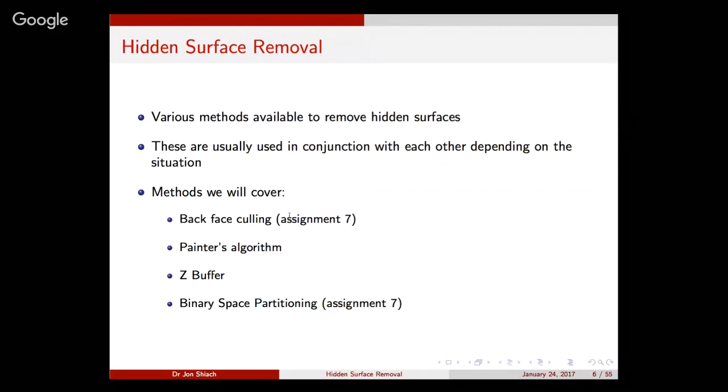You may often see me using this object as well. We're going to be looking at various methods. There are more than one method; like with clipping, there's more than one method to do it. Some of these methods are used in conjunction with other methods, some are used for certain situations. We will be considering four main methods. What we're going to be doing this morning is back face culling, which is part of your question one from Assignment 7. Painter's algorithm is another method, Z-buffer, and finally something called binary space partitioning, which is also part of Assignment 7.